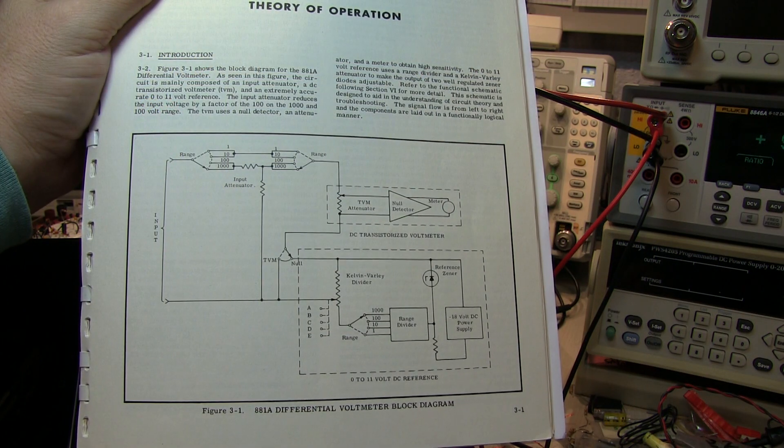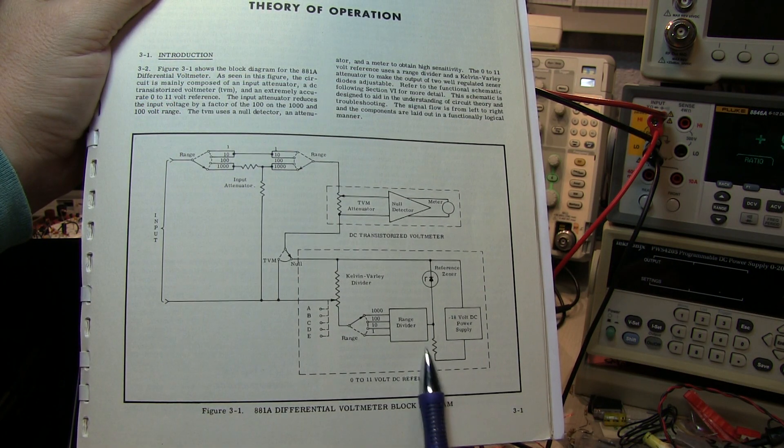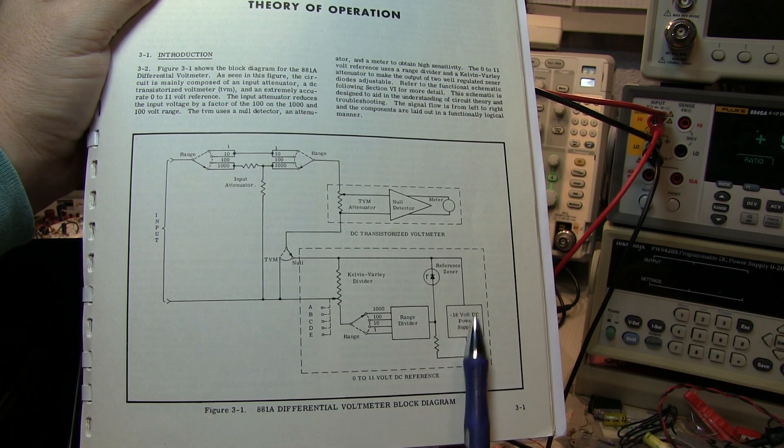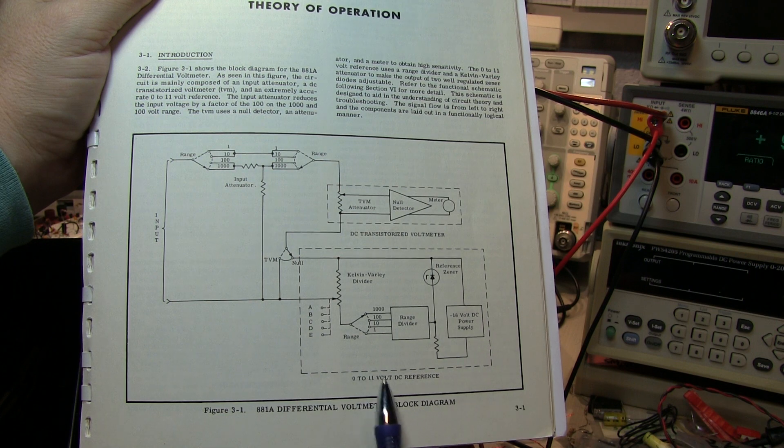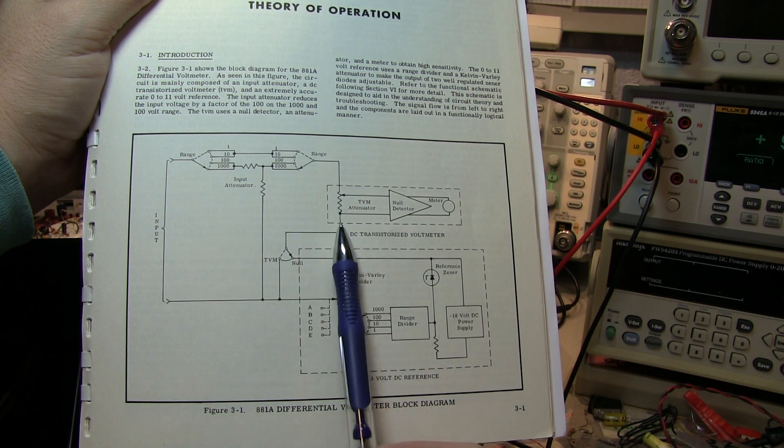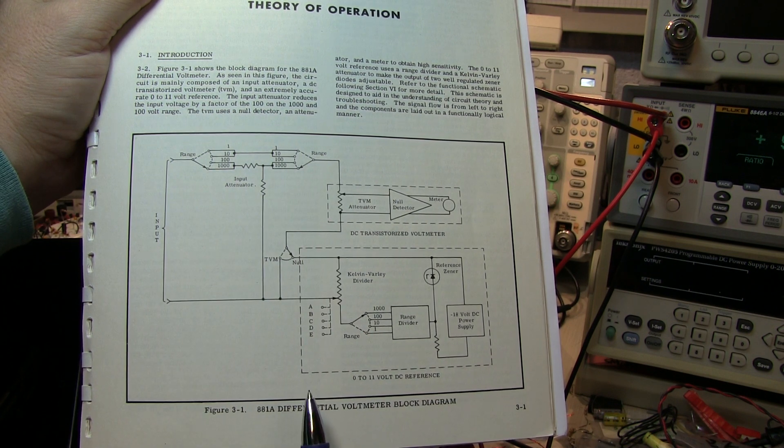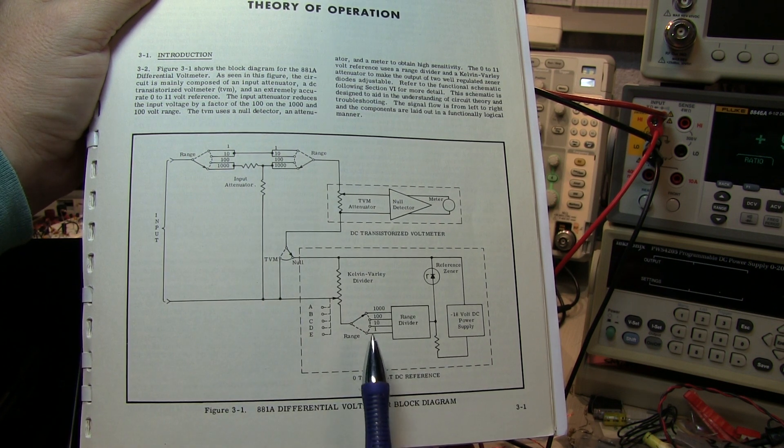The basic theory of operation was pretty simple. There was an internal precision 11 volt reference that was developed within this block here that provides voltage to one side of a differential voltmeter, and then the input signal is applied to the other side of the differential voltmeter.